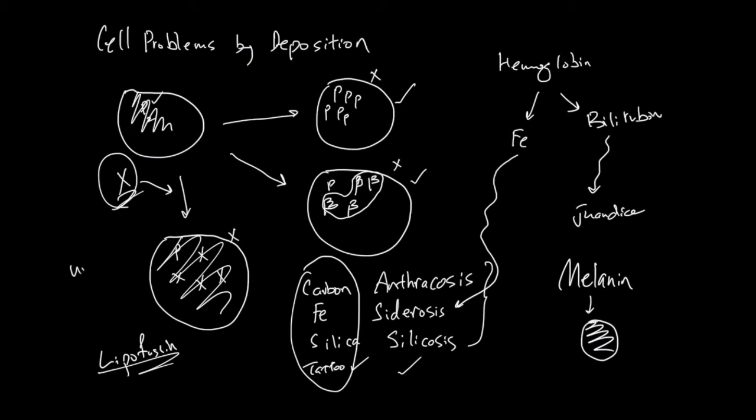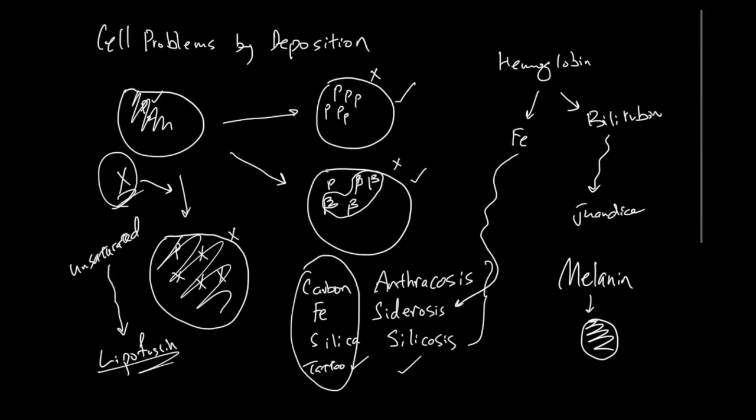For example, unsaturated fat cannot be completely processed and they can become lipofuscin and stay in the cell. Cells accumulate lipofuscin as they age. They are considered the wear and tear element of the cell.